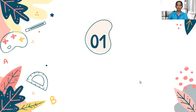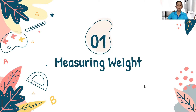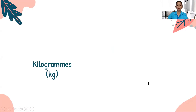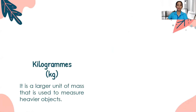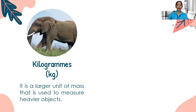Our first topic is all about measuring weight in kilograms and grams. First, let's define kilograms, or kg. It is a larger unit of mass that is used to measure heavier objects. For example, an elephant. An elephant is heavy because it is big and it has a larger weight.